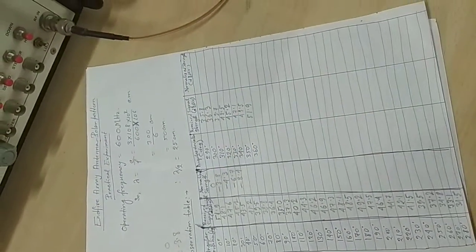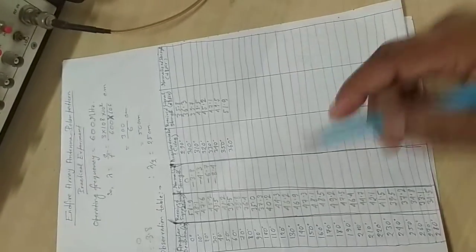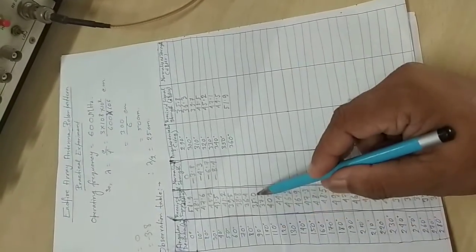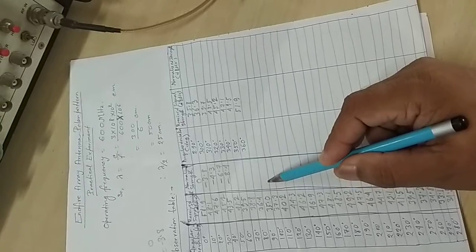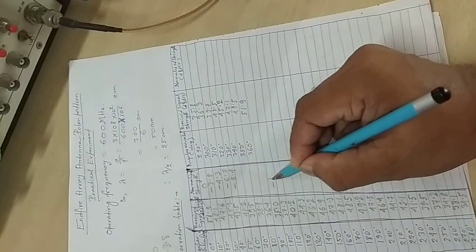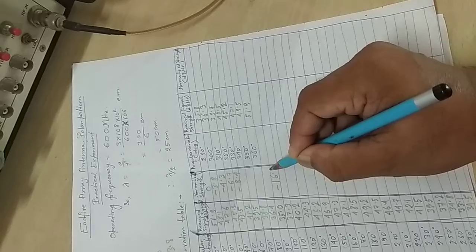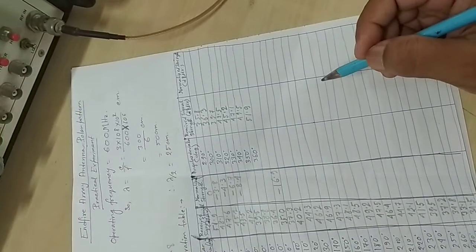We can calculate all the normalized values and we can see that at 90 degrees the subtraction will be maximum, that is minus 16.9.